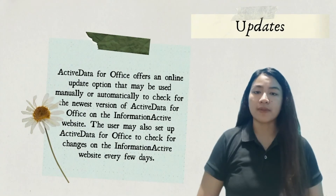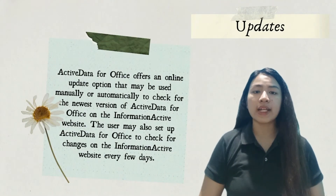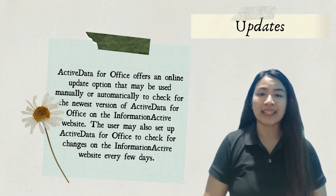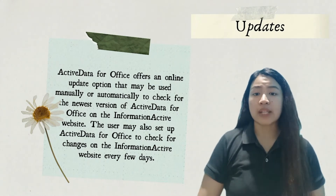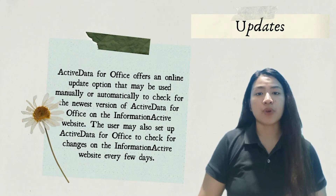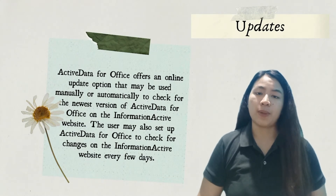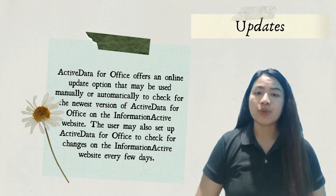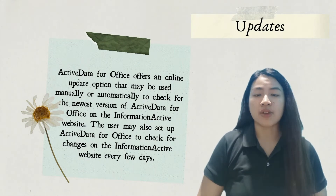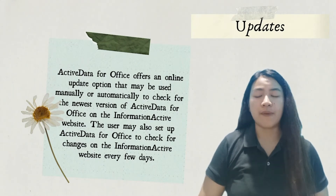Active Data for Office offers an online update option that may be used manually or automatically to check for the newest version of Active Data for Office on the Information Active website. The user may also set up Active Data for Office to check for changes on the Information Active website every few days.